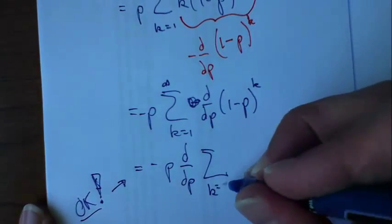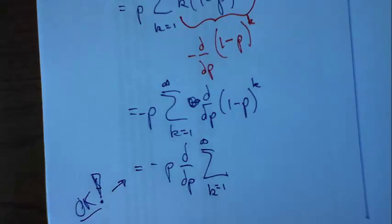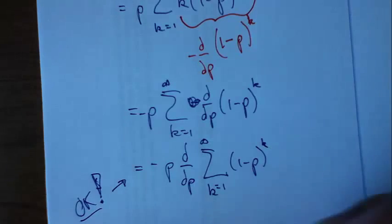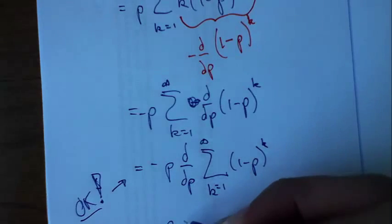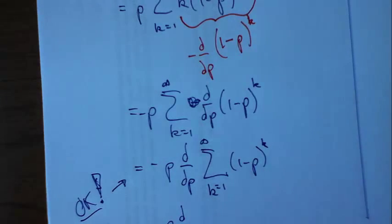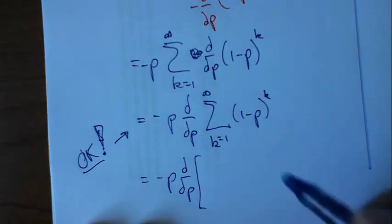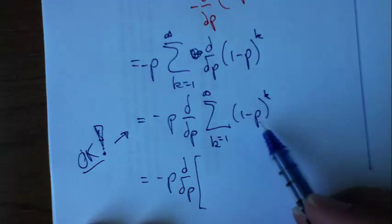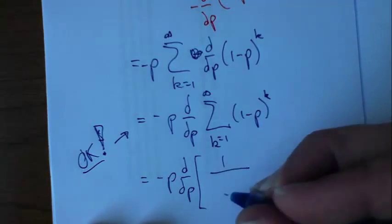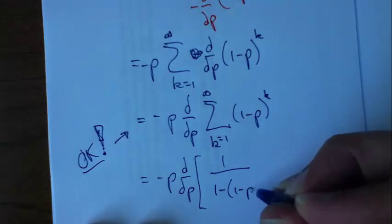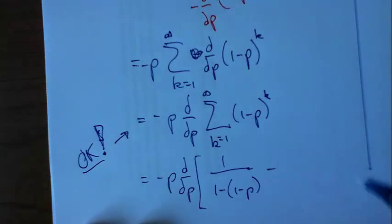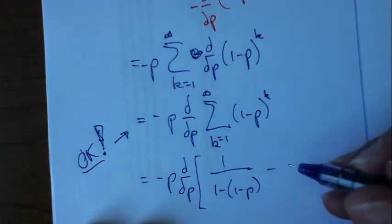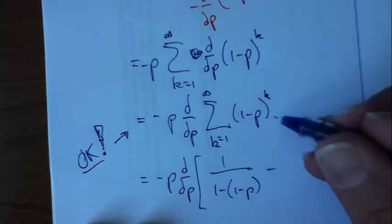This is, it goes from 1 to infinity of 1 minus p to the k. Now I know how to deal with that sum, I think. That sum is almost the same as the sum from 0 to infinity of all this stuff. Remember, this is bounded by 1. So this is really a lot like this. Then I've got to subtract off that term where k equals 0. If k equals 0, then this is just a 1.